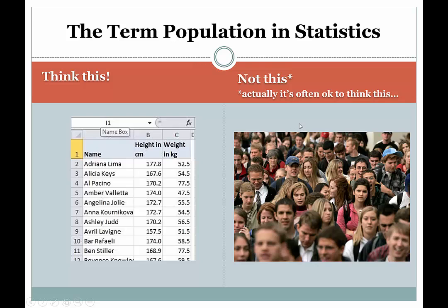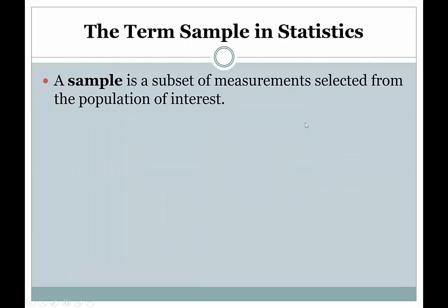Maybe not the most important distinction, but occasionally it will help you to think about what's really of interest to the investigator. By thinking about it in terms of measurements, it'll help make other things clear down the road. Let's look at another term: the term sample. A sample is a subset of measurements selected from the population of interest.